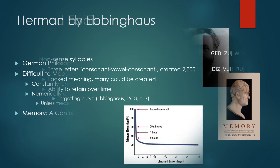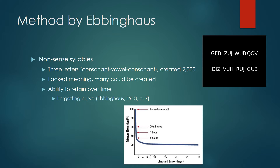The nonsense syllable, or CVCs, is what Ebbinghaus used to study memory. Nonsense syllables are three letters patterned with a consonant, then a vowel, and then a consonant. He created 2,300 of them. He chose to use nonsense syllables because they lacked meaning, which was important for his experimental method because he wanted to eliminate any compounding factors. These syllables could also be created without replication and in very large numbers that could have probably exceeded 2,300.